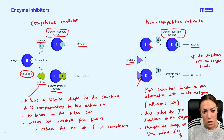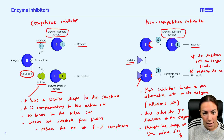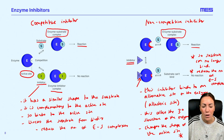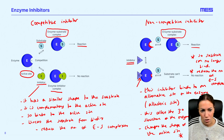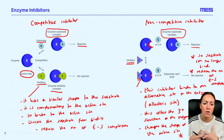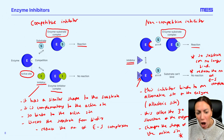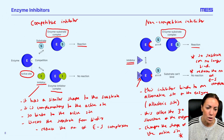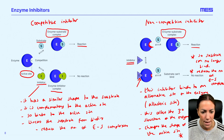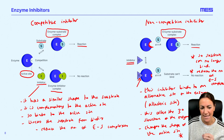Because the active site is no longer complementary — the shape of the active site has been changed — it's no longer complementary to the substrate, so the substrate can no longer bind. Again, it reduces the number of enzyme substrate complexes. Make sure you're using keywords: enzyme substrate complex, complementary, active site, and change in tertiary structure when describing a non-competitive inhibitor, because missing these will cost you marks.